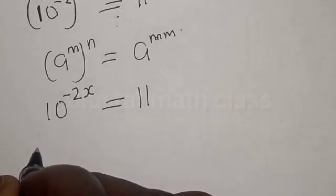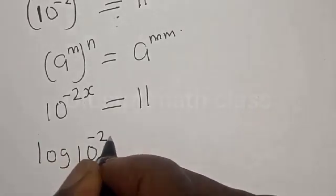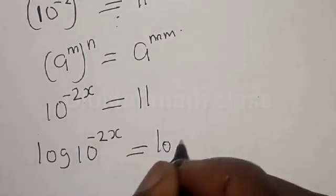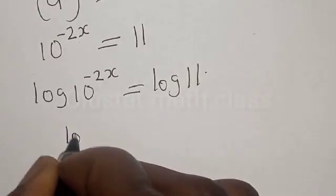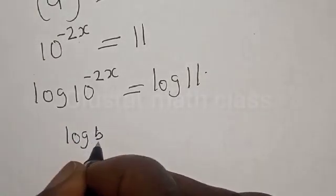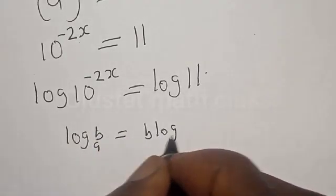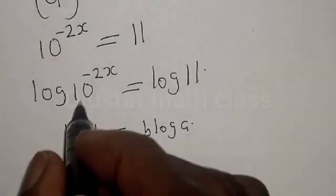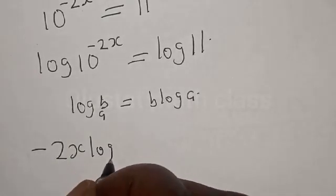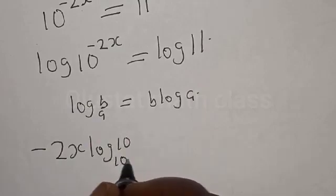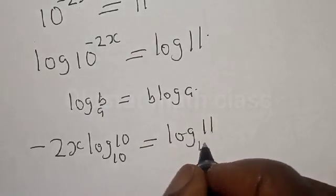Let's take the log of both sides. We have log of 10 raised to the power of minus 2s is equal to log 11. Remember, if you have log of b raised to the power of n, base a, it is the same thing as n times log b, base a. Then we have minus 2s times log 10 is equal to log 11, base 10.